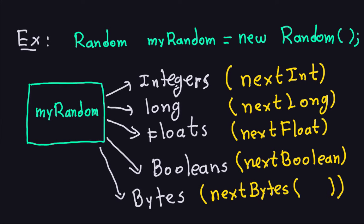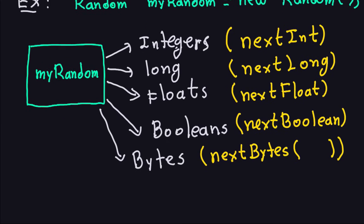Hello and welcome again. This is the third video of a sequence on random numbers in Java. In the last video we discussed how to use the Java class Random to generate random numbers, bytes, or booleans. You first declare the object with its name and the declaration expression. Once the object is created you can generate integers, longs, floats, booleans, and bytes — that's what we did last time.